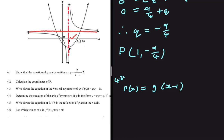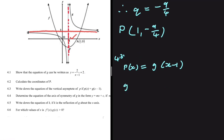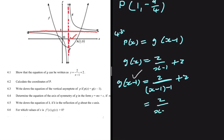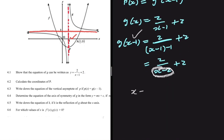Let's see what g of x minus 1 is first. We know g of x equals 2 divided by x minus 1, plus 2. So g of x minus 1 means substituting x minus 1 in place of x, giving 2 divided by x minus 1 minus 1, plus 2, which simplifies to 2 divided by x minus 2, plus 2. To find the vertical asymptote, we equate the denominator to 0: x minus 2 equals 0, so x equals 2 is the vertical asymptote. We equate to 0 because division by zero is undefined.